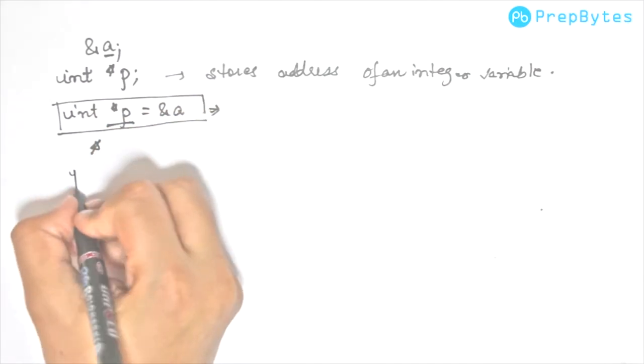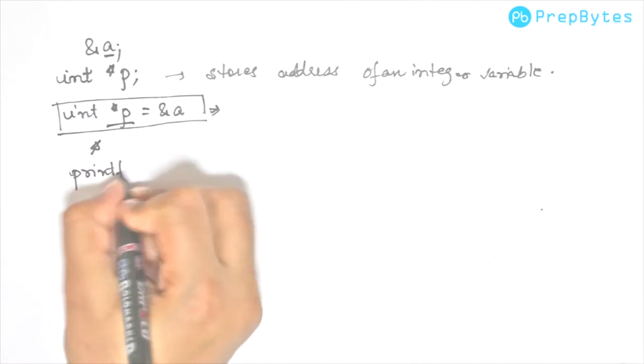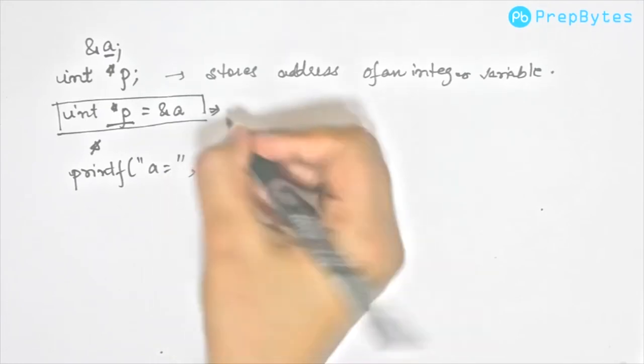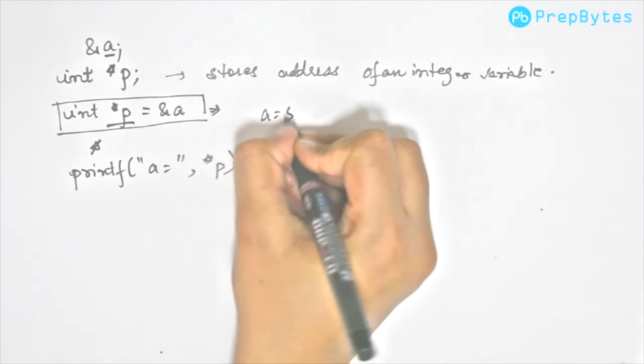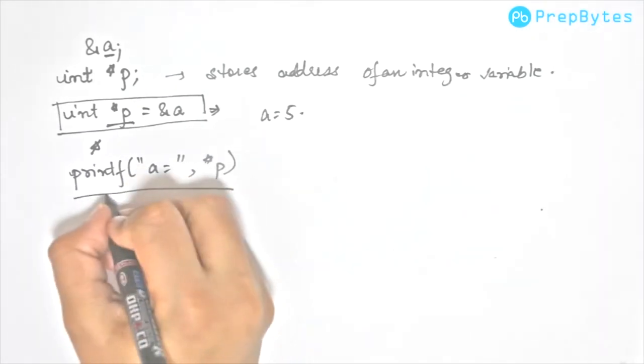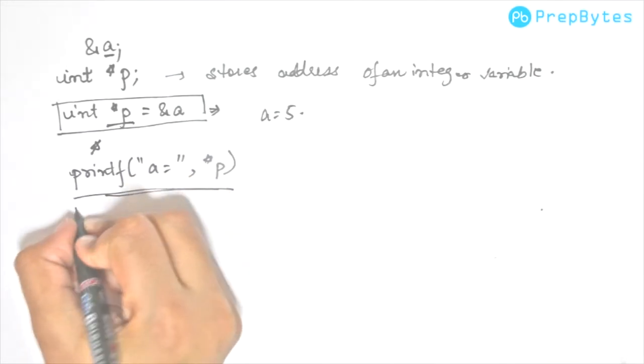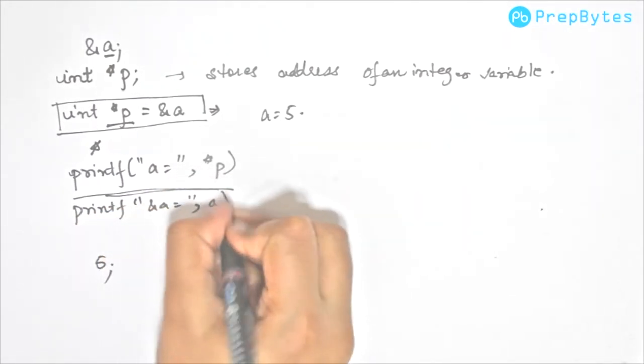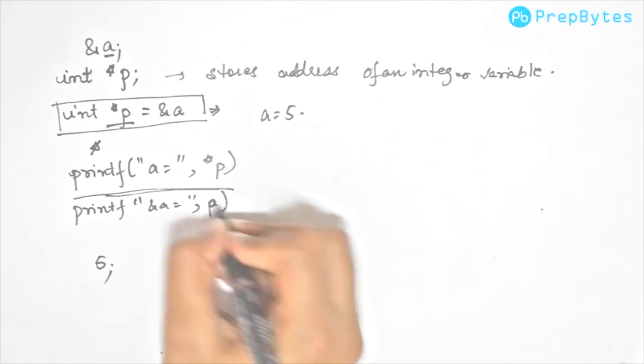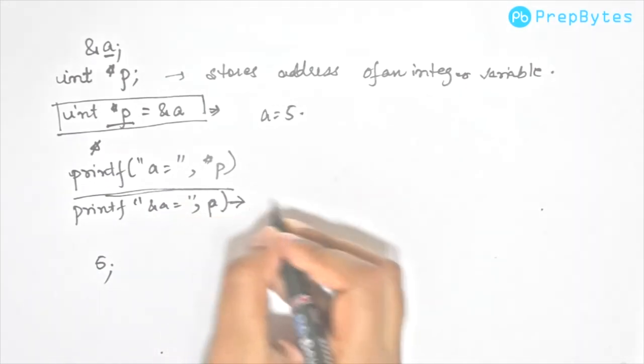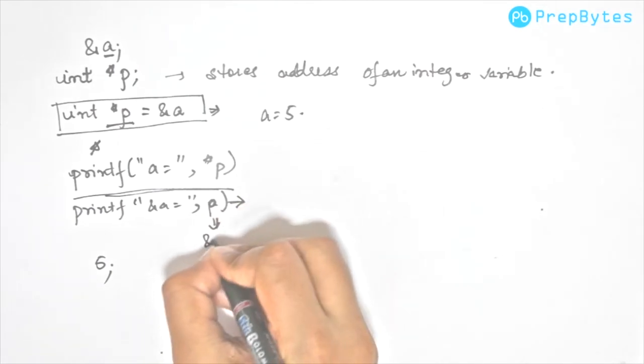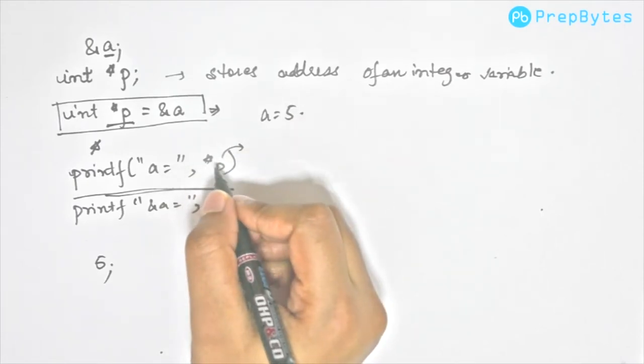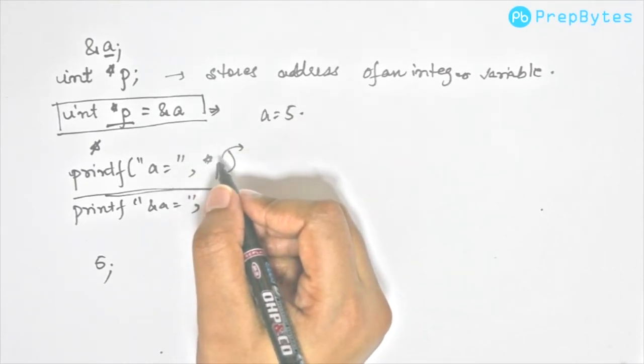If we do printf a equals star p, and let's say we have a equals 5, this particular thing will print 5. If we print p, then this will print address of p because this p is equivalent to &a. Try to understand that star p is the way of accessing the value that is stored in that particular address.